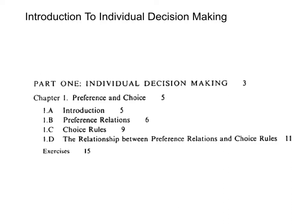The interesting issue here will be that of the relationship between the two approaches — mainly, given certain preference relations, and specifically rational preferences, what can we say about the choices that will be generated? And given a particular choice structure, given the choices made by the consumer, what can we say about underlying preferences?